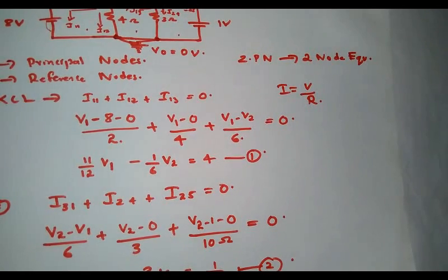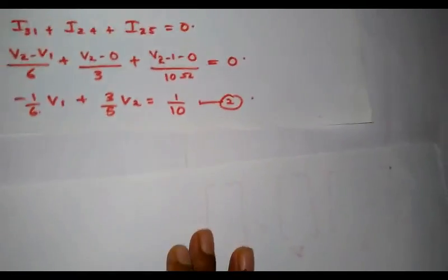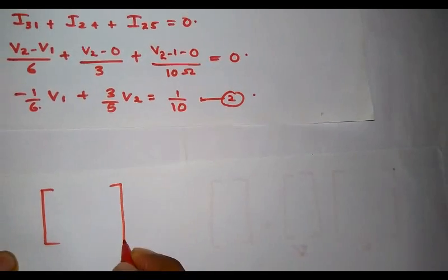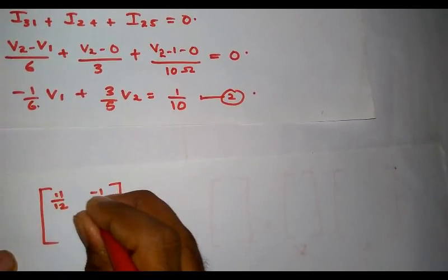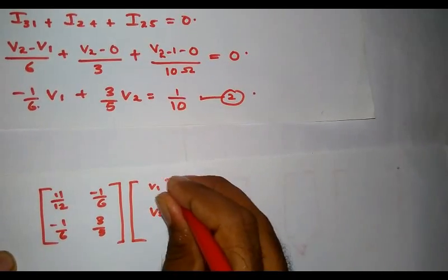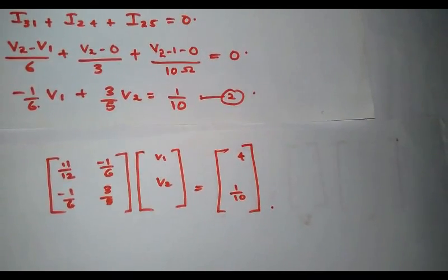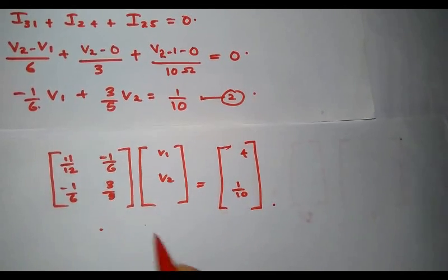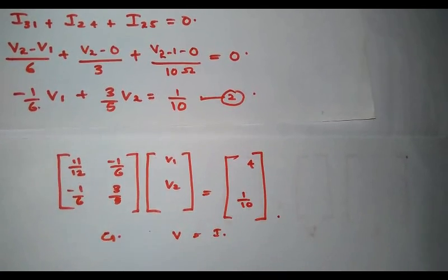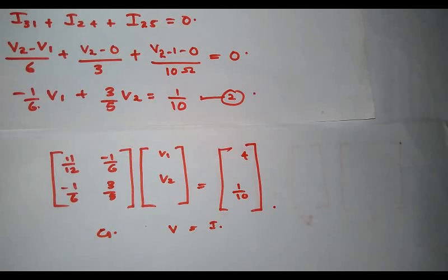To determine V1 and V2, I solve the two equations in matrix form. The matrix equation is: [[11/12, −1/6], [−1/6, 3/5]] × [V1, V2]ᵀ = [4, 1/10]ᵀ. This matrix is called the conductance matrix G, and the system is represented as G × V = I, where G is the reciprocal of the resistance matrix.